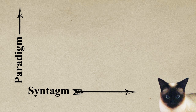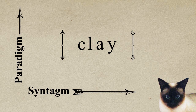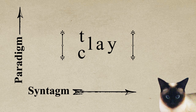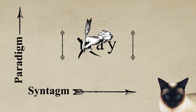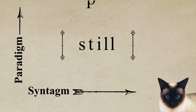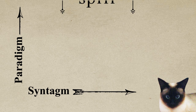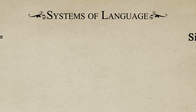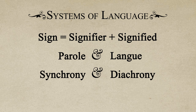Let's look at another example using sounds in the word 'clay.' In this syntagm, the C can be replaced by P to produce 'play', but we can't replace the C with a T — English doesn't allow the TL sequence. In another syntagm, 'still', we can replace the T with a P to produce the syntagm 'spill.' The T and the P belong to the same paradigm in this example. The axes of the syntagm and the paradigm are key to understanding what Saussure means when he talks about meaning depending on the systems of a language.